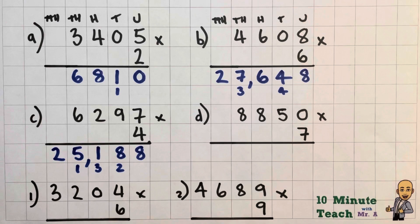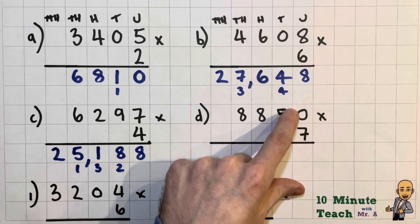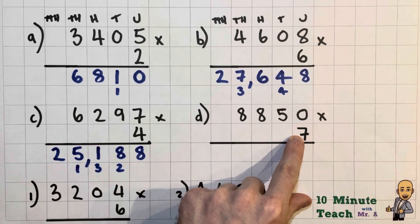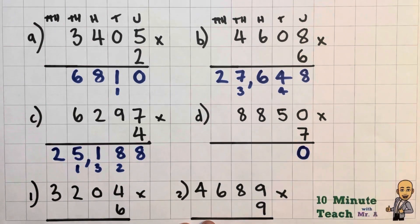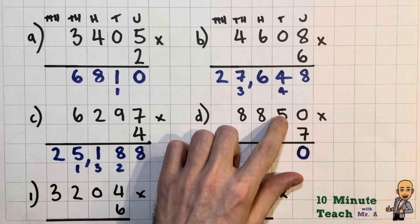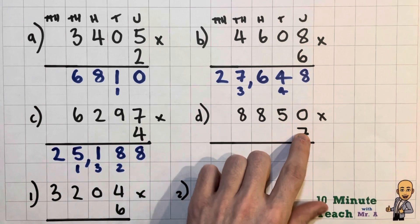Right, I have one more that we're going to have a little go at now as well. So let's start over the units again. So I've got 0 lots of 7, I have absolutely nothing there. So I can put my 0 straight in there with nothing at all to carry. So 7 times 5 is 35, or 50 times 7 is 350.